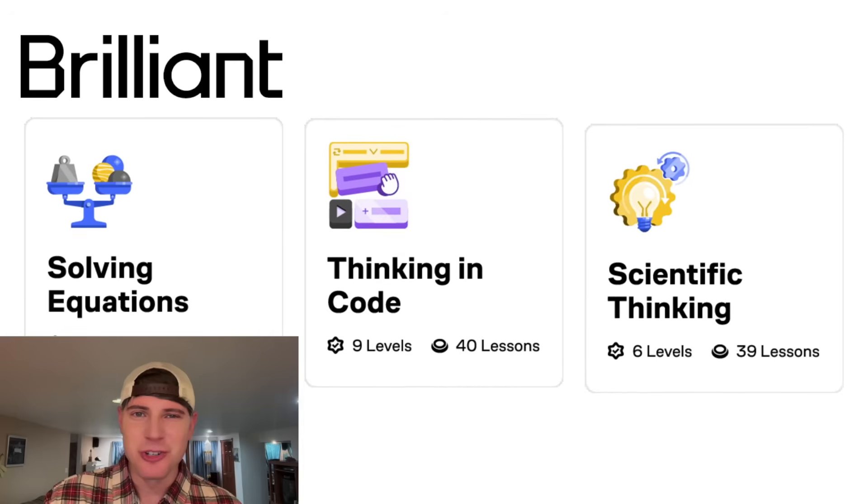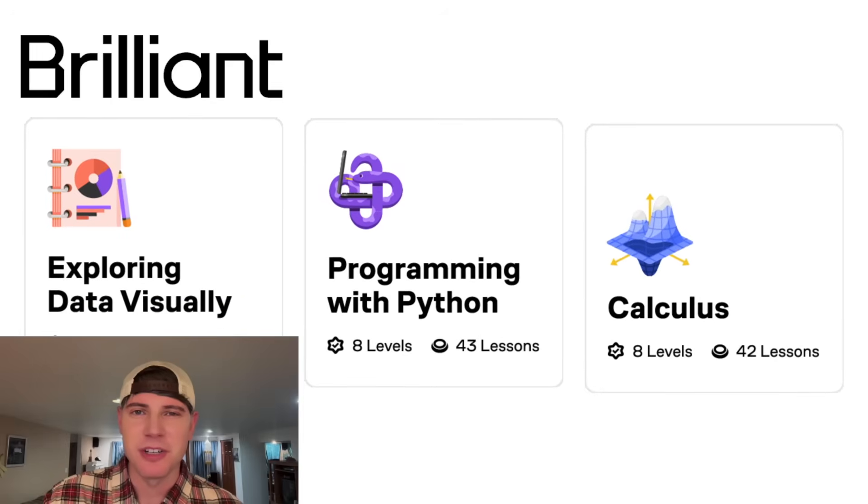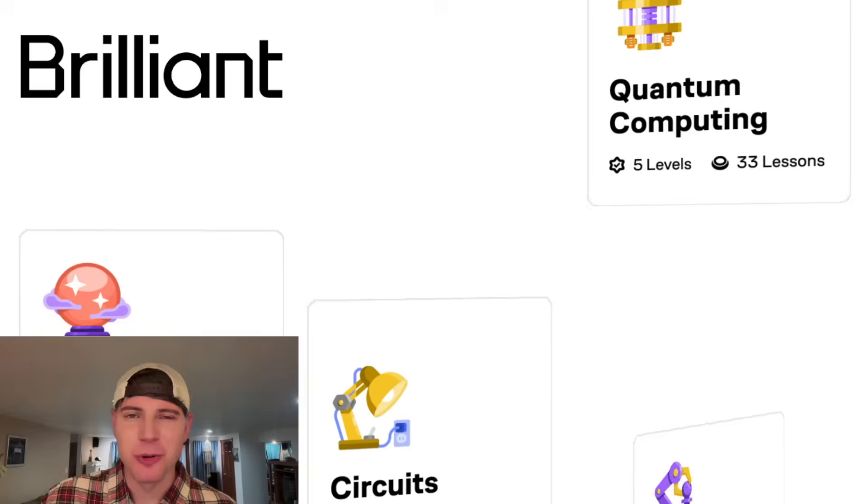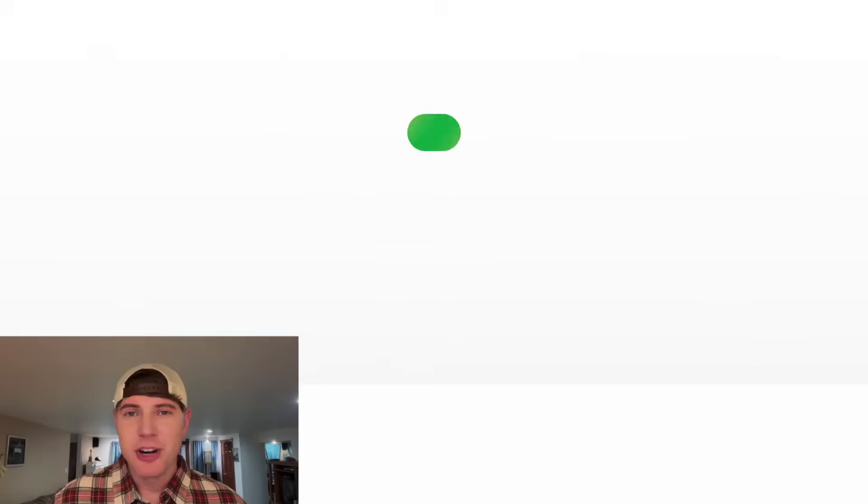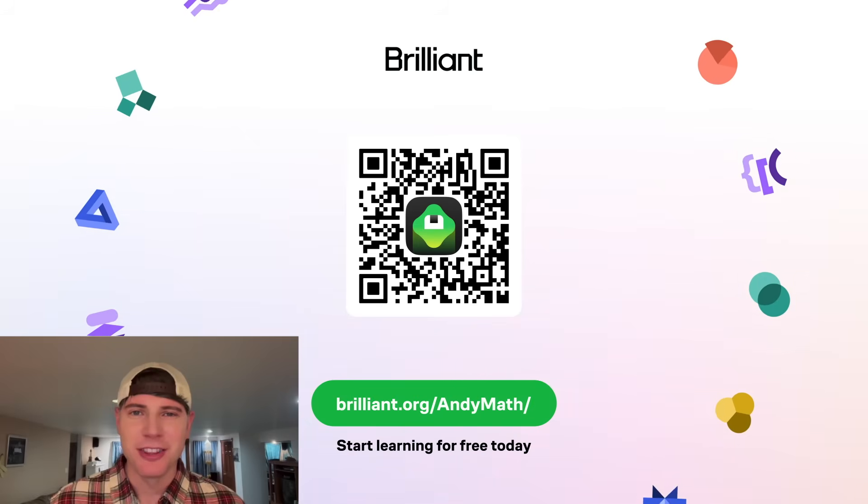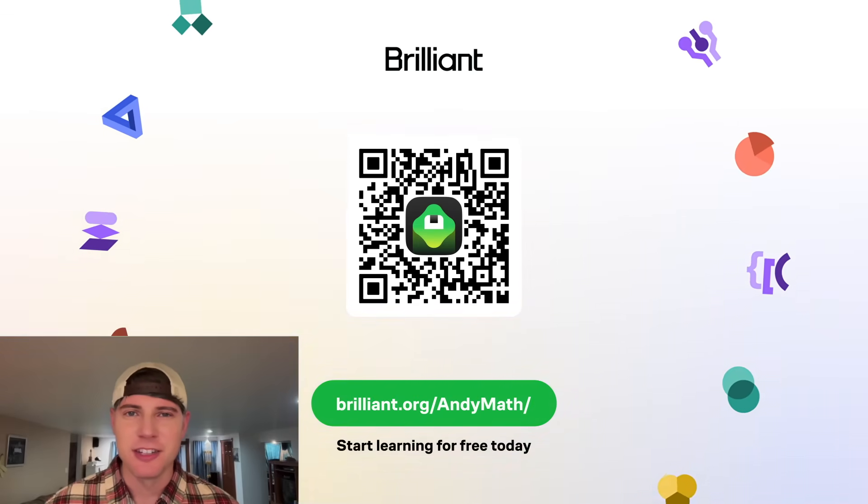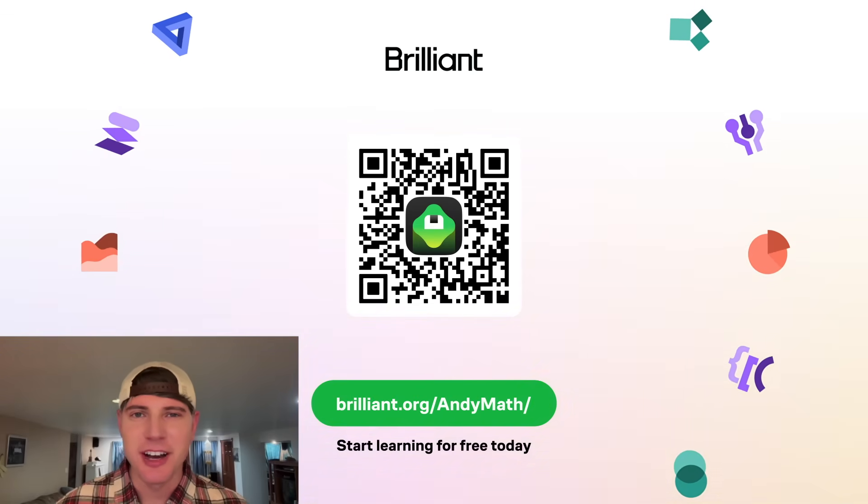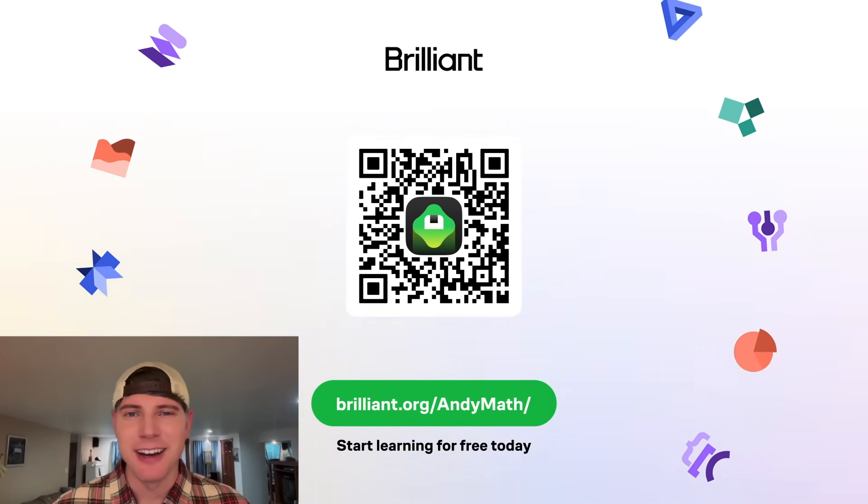Math lovers will especially enjoy the courses in geometry, algebra, calculus, and probability. And they have tons more fun courses in all the topics. To try Brilliant, visit brilliant.org slash andymath or scan the QR code on the screen. Or you can click on the link in the description. You can also get 20% off an annual premium plan. How exciting.